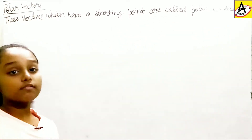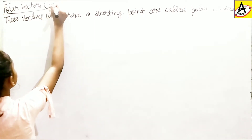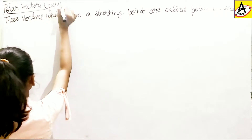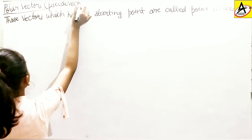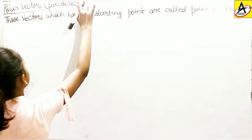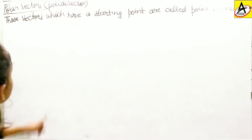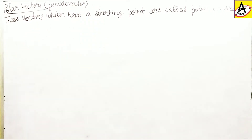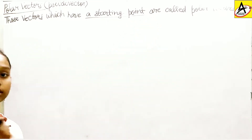The other name of polar vector is pseudovector. But I will refer to it as polar vector. So it is simply saying that those vectors which have a starting point are called polar vectors.